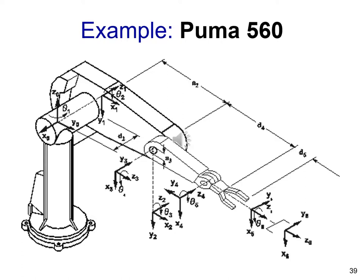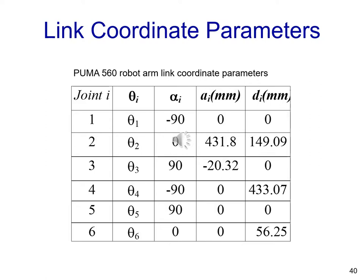The Denavit-Hartenberg table that we are going to use is easily found to be this one. This can also be obtained from robotics books and reference pages.